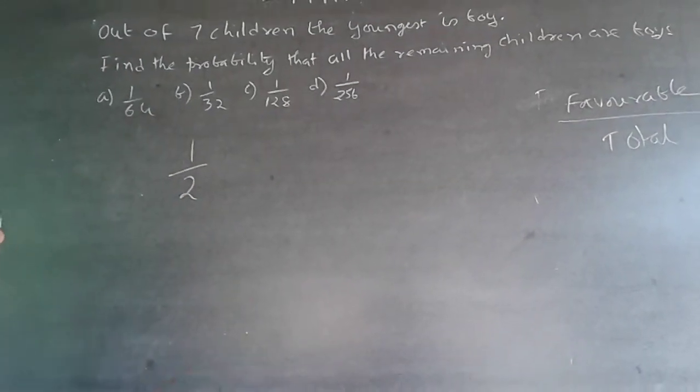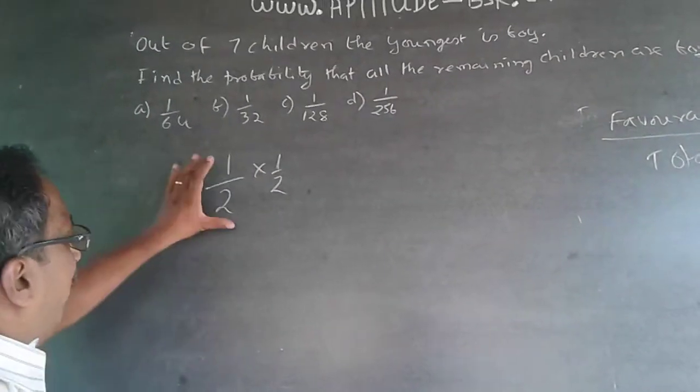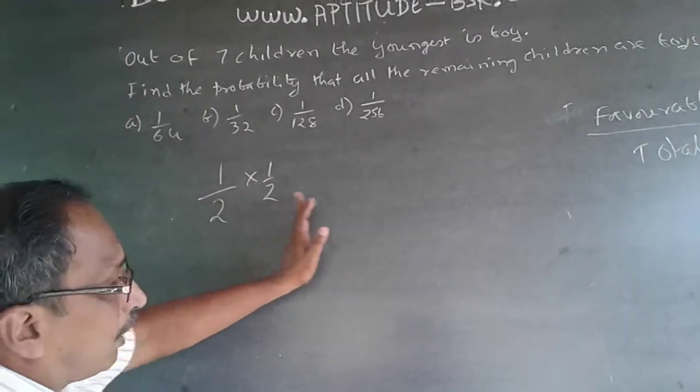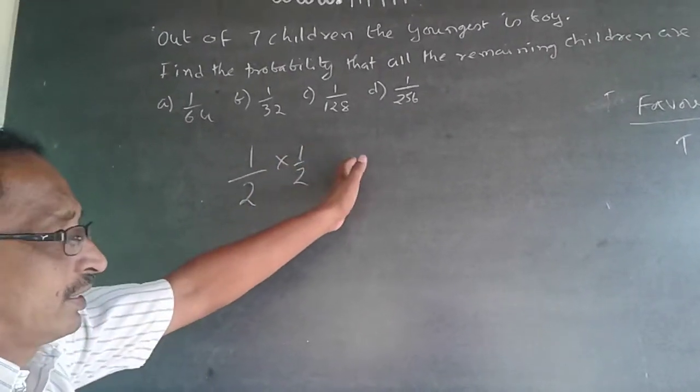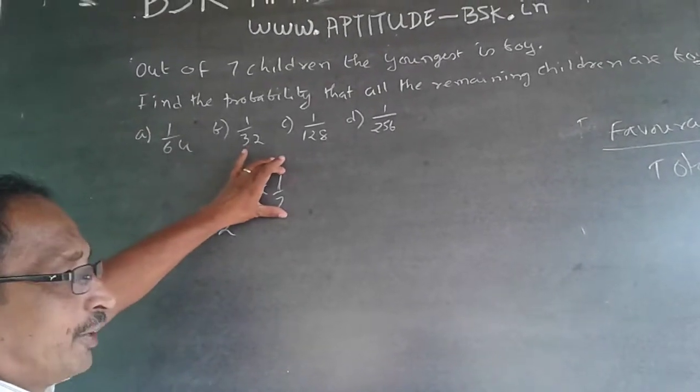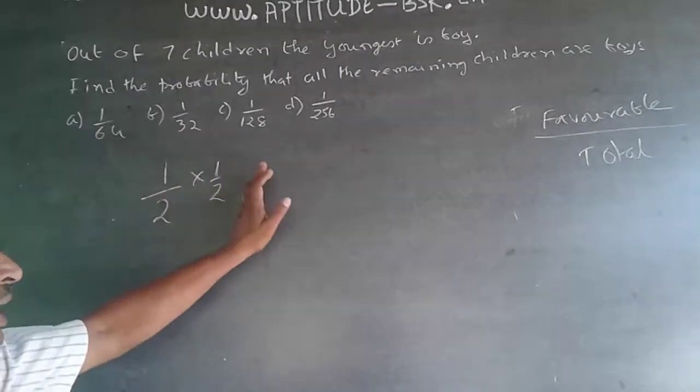Out of this 1 by 2, the second probability is, within this 1 by 2 will be another 1 by 2. So, it will be 1 by 2 into 1 by 2. This is for the first child. This is for the second child. You will have to keep on multiplying like this. Don't keep on adding it.